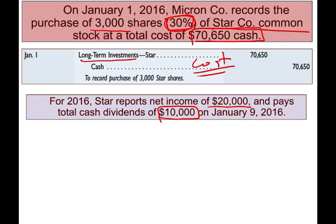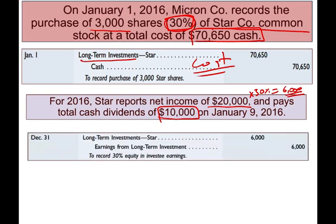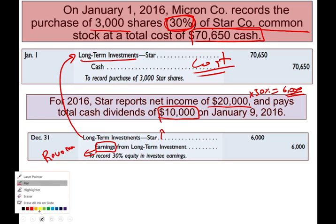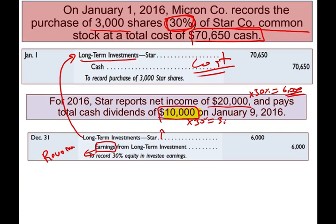When Star reports net income, we qualify for 30% of that — basically, it's our net income. So $20,000 times 30% is $6,000. We are going to increase our investment by $6,000 and credit an earnings account — earnings from long-term investments. They also paid $10,000 in cash dividend. How much are we going to get? We're going to get 30% of that, which is $3,000. We debit cash $3,000.